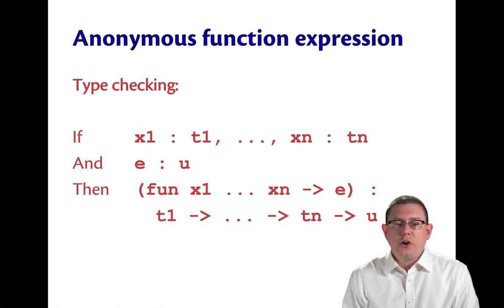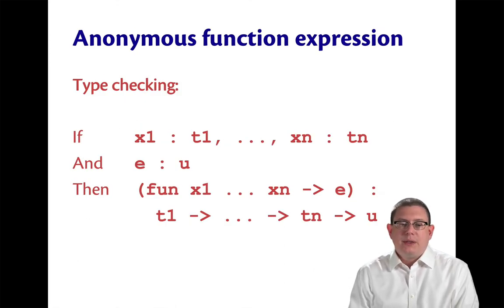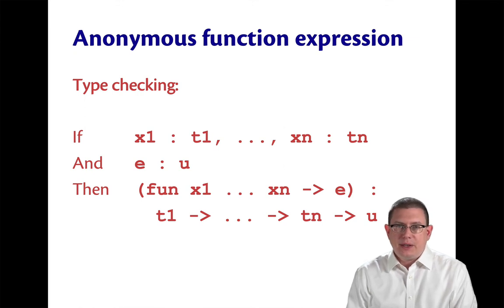The type checking rule for anonymous function expressions essentially says that the type of the function is just the type of its arguments arrow the type of its output.